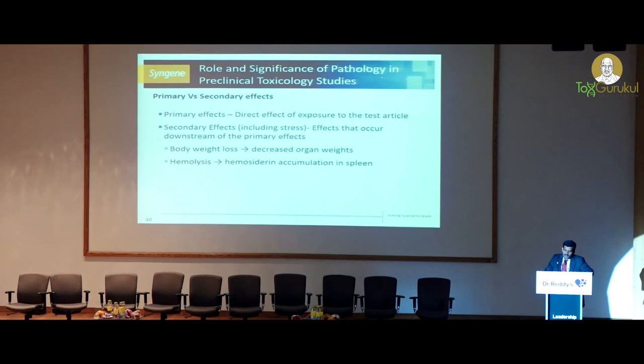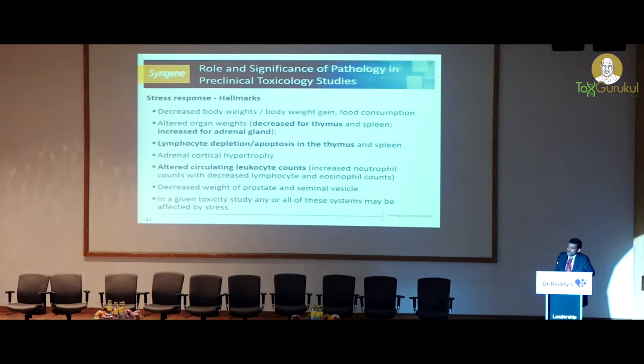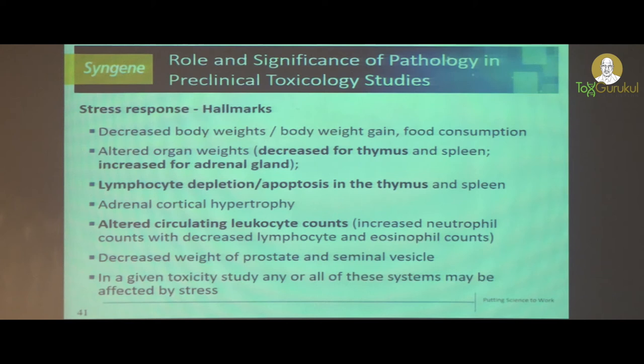Another example is hemolysis: hemolysis is the primary finding. As a result of hemolysis, hemosiderin starts accumulating in the spleen. Here, hemosiderin accumulation in the spleen is considered secondary. What are the stress responses? Most of the time the toxicologist faces this when conducting day-to-day studies.